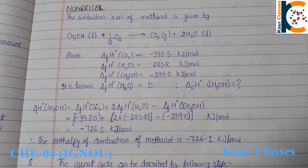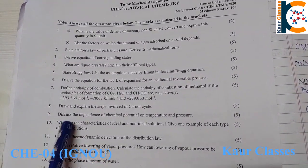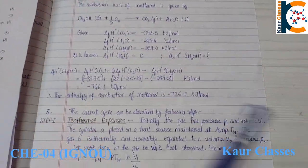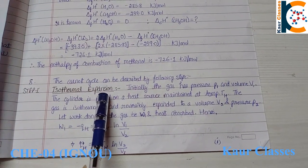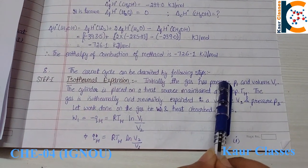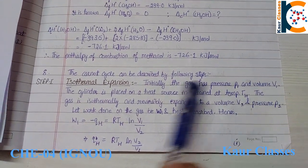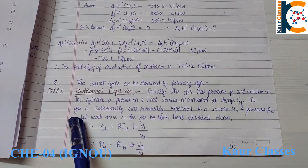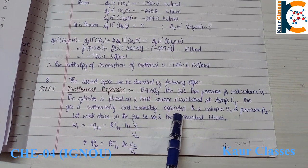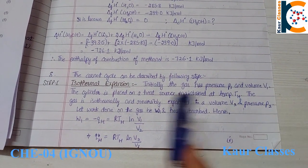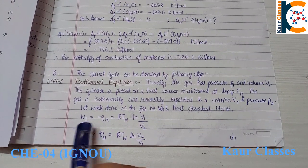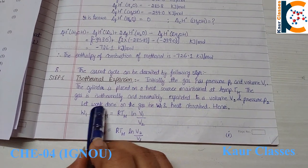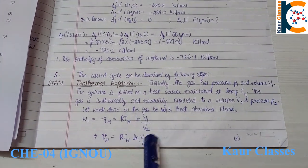Next, question number 8: draw and explain the steps involved in the Carnot cycle. There are four steps. Step one — isothermal expansion: initially the gas has pressure P1 and volume V1. The cylinder is placed on a heat source at temperature T_H. The gas is isothermally and reversibly expanded to volume V2 and pressure P2. The work done W1 = −q_H = RT_H log(V1/V2).